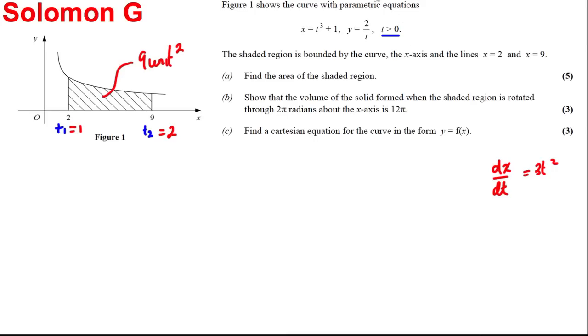Okay, next what we're going to do is work out the volume. So the volume formula, parametrically, is pi multiplied by the integral between t1 and t2 of y in terms of t squared dx dt multiplied by dt.